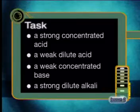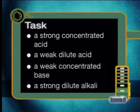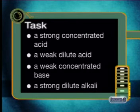Write down an example of each of the following: a strong concentrated acid, a weak dilute acid, a weak concentrated base, and a strong dilute alkali. Make sure you join me for our next lesson on acids and bases, where we will discover and use a method to measure a range of acidity. Until then, goodbye.